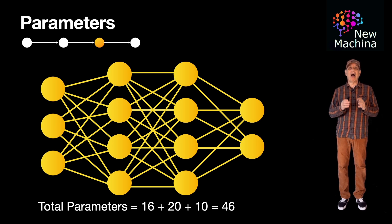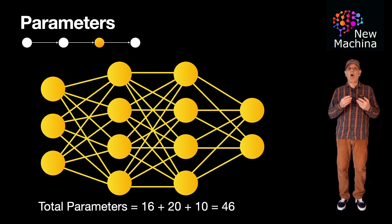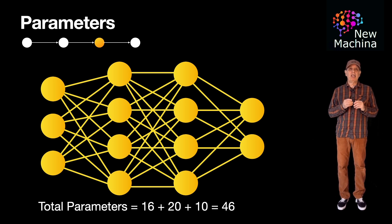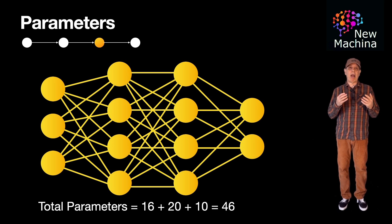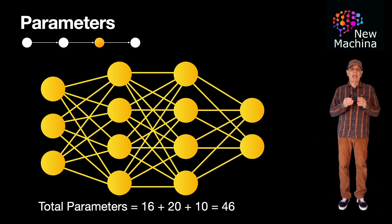Okay, so hopefully this gives you a high level overview of neural network parameters. In future videos, I'll go over neural network hyperparameters. These are another type of parameter that are different from these trainable parameters we just discussed. Keep an eye out for this video if this sounds interesting to you.